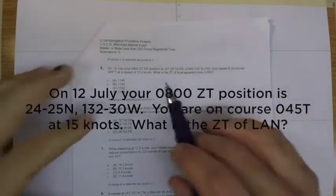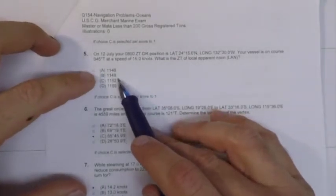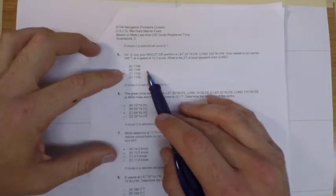Looking at the answers, we can see that they're spread apart by about anywhere from two to seven minutes, so we need to be fairly precise. That means we need to do some sailings, either mid-latitude or something, or plotting sheet to get us where we need to be in time to solve this problem.